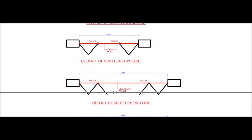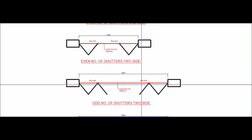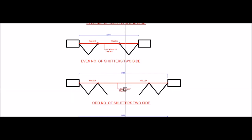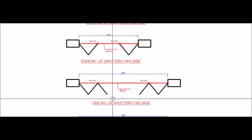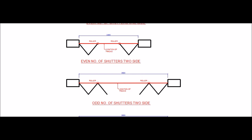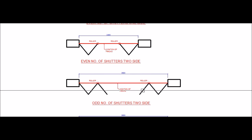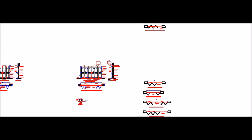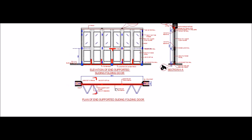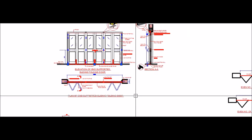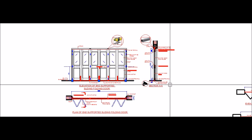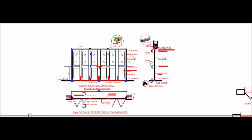One thing to observe in this type of configuration is that when the shutters are closed, the two central shutters can be opened without sliding the door. This is the advantage of having an odd number of shutters — some shutters are free to move and are not connected to the rollers. If you have any queries please contact us at architectsacademy@gmail.com. Thank you.